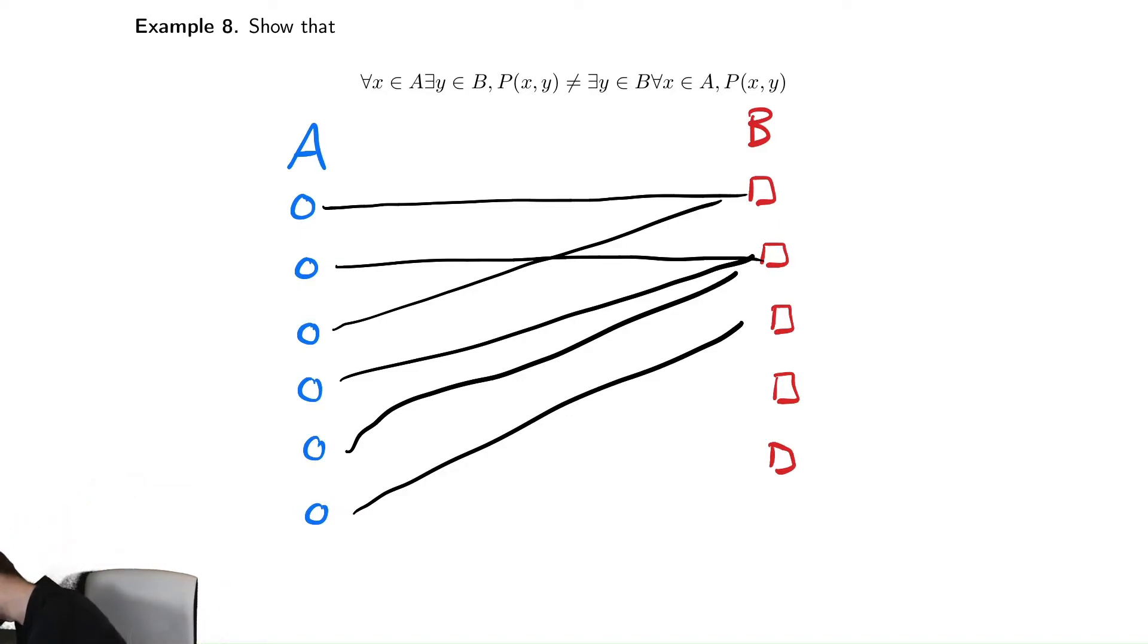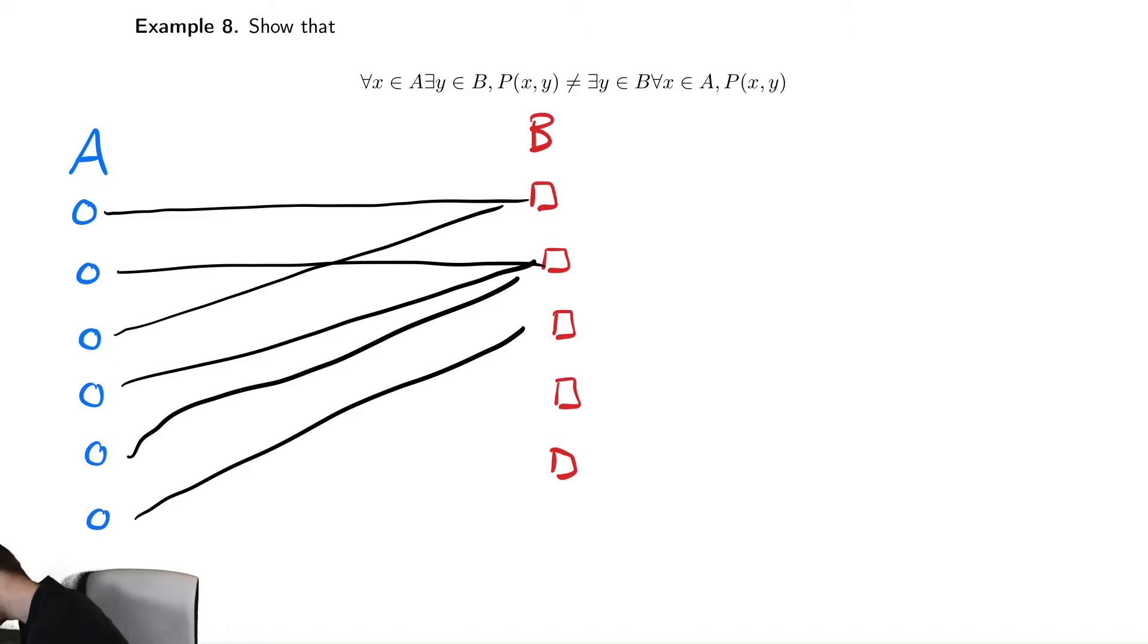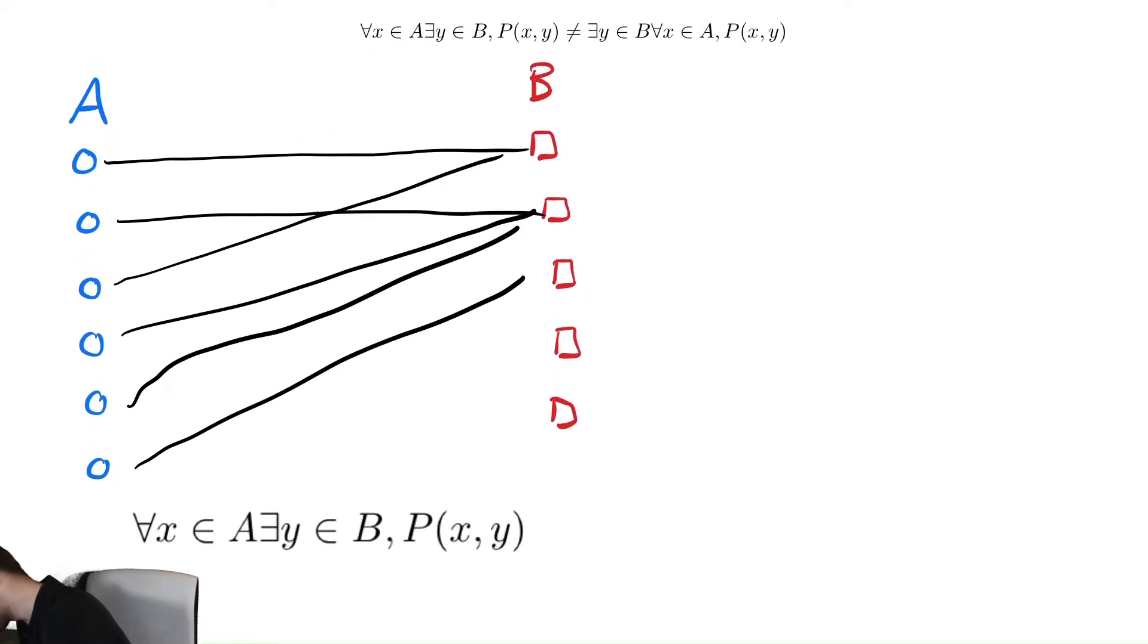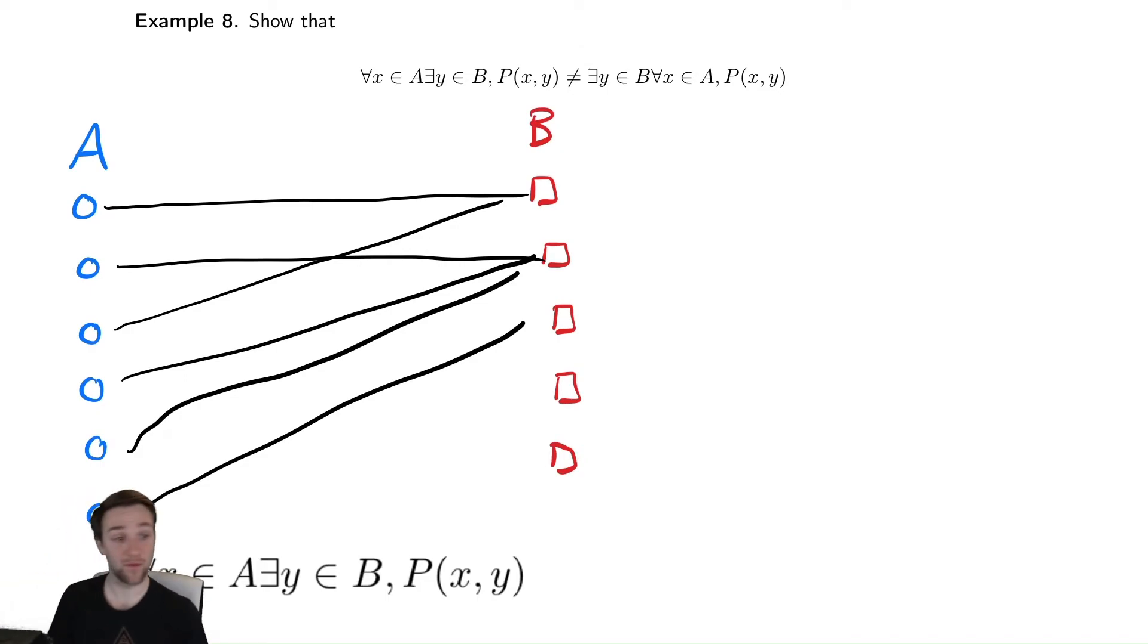So let's move this over now that we've drawn it. And this is our visualization of the left hand side there. So let's copy that statement, paste it down here so we have a label for that. And now let's do the same thing for the right hand side. So we're going to draw the exact same picture.